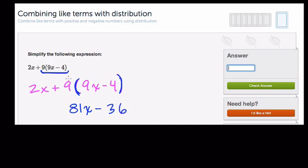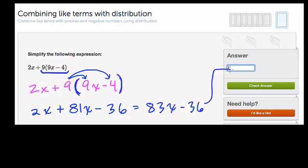You just multiply the 9 by both terms in here. Then we have our 2x, and you want to add, so it's 81x plus 2x, well that equals 83x, and then minus 36, and we're done. That would be our answer.